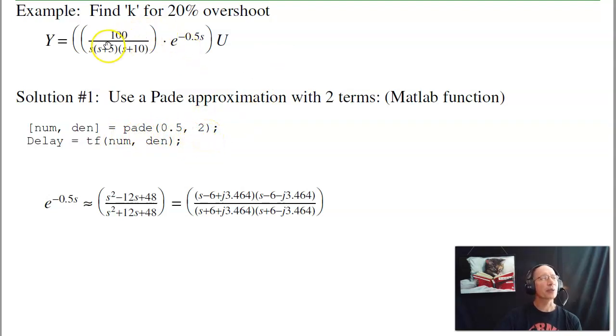For example, suppose I have this system and I want to find the feedback gain k for 20% overshoot. I need to know the poles and zeros of the half-second delay. One way is to use MATLAB and do a Pade approximation with 0.5-second delay for two terms, second order. What that gives you is two zeros and two poles.